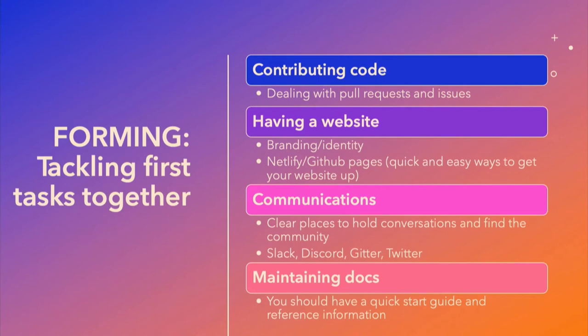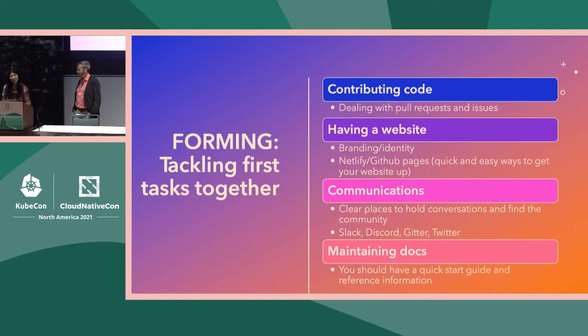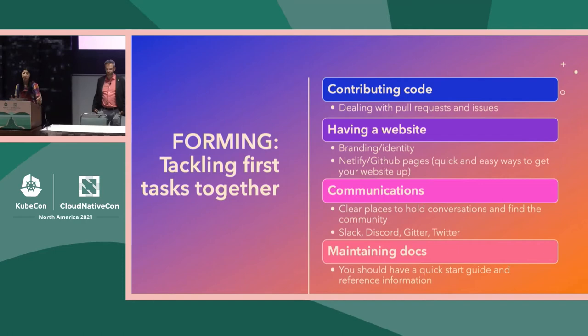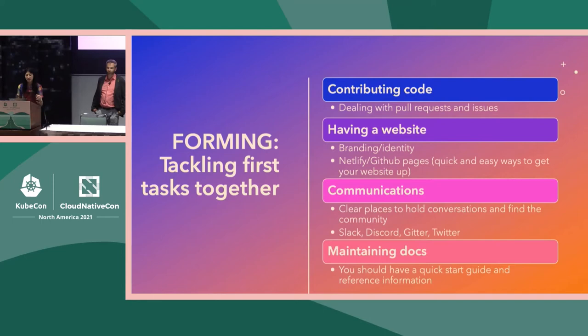Having a website is important. Settle on your branding and messaging early on — both for your team and to project outward — because if you can't figure this stuff out, why would someone else understand what your project is about? From our experience, using Netlify or GitHub Pages is a quick and easy way to get started. For communications, think about where your team and larger community already exist and jump in there — the barrier to entry is smaller. Set up dedicated channels to hold conversations. Be intentional early, because once you set up these channels, you're a bit committed.